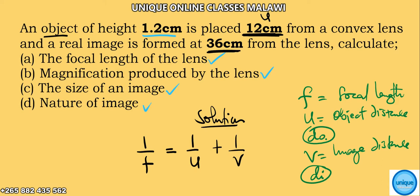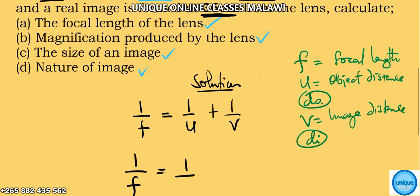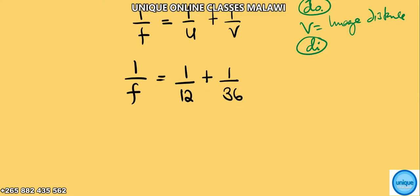And the image distance is 36. So we're going to substitute: 1 over f is equal to 1 over u, so we're putting here 12, plus 1 over v, we're putting 36. We need to find the common denominator here—the common denominator is 36.